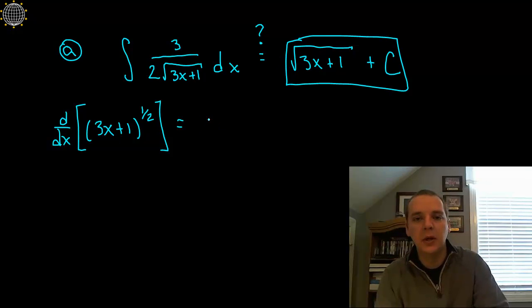Then chain rule. We bring the one half down times 3x plus 1 to the minus one half. And then because of the chain rule we'd follow that with a 3 which comes from the derivative of the inside.